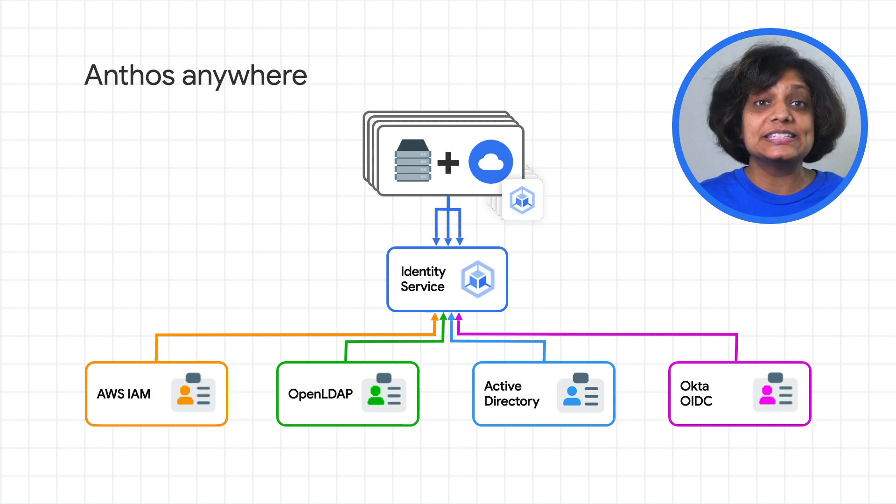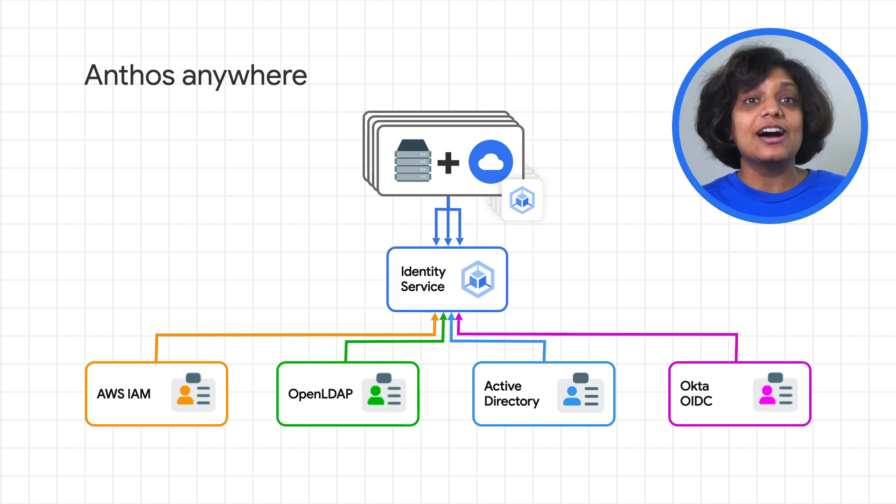Anthos Identity Service is designed to work seamlessly with other Anthos components and your existing identity investments. Beyond user authentication, you can also enable workload authentication for workloads running in GKE to consume services provided by Google APIs. Simply configure a Kubernetes service account to automatically authenticate when accessing Google Cloud APIs. There's no need to worry about safeguarding private keys for PKI and client certificates or managing bearer and bootstrap tokens.